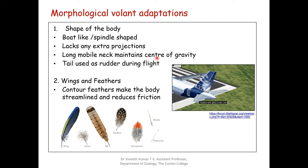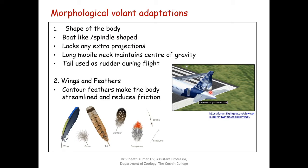The long mobile neck maintains the center of gravity, which is also important in flight. The tail is used as a rudder during flight — just like the rudder of an aeroplane, which is also seen in the case of ships. These rudders help to change the path of flight, for birds, aeroplanes, and ships alike.